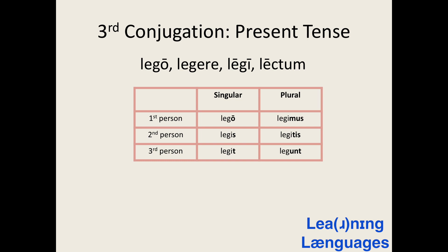Here is how we conjugate regular third conjugation verbs, with legere — meaning 'to read' — as the example. Lego: I read. Legis: you (singular) read. Legit: he/she/it reads. Legimus: we read. Legitis: you (plural) read. Legunt: they read.